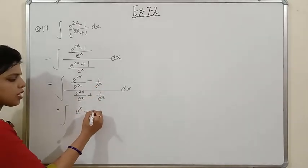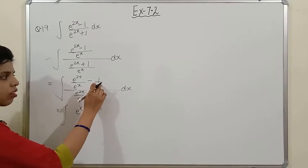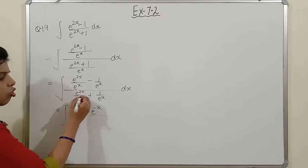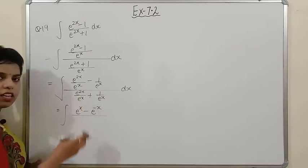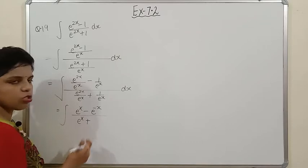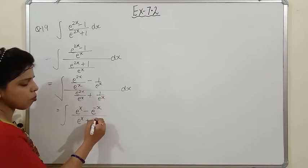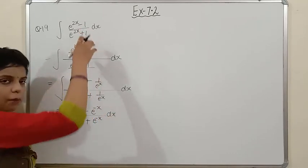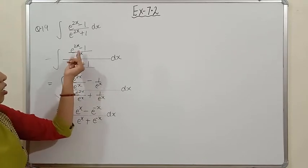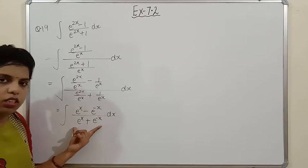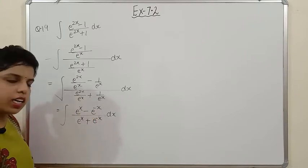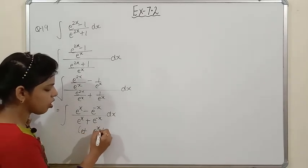Now the question is in the form ∫(e^x − e^(−x))/(e^x + e^(−x)) dx. The function is e^x + e^(−x) and the numerator e^x − e^(−x) is exactly its derivative. So let t = e^x + e^(−x). Differentiating: derivative of e^x is e^x, and derivative of e^(−x) is −e^(−x), so dt = (e^x − e^(−x)) dx — which is exactly the numerator.